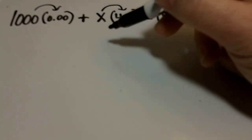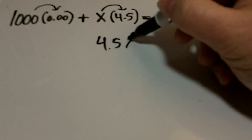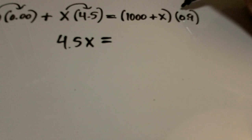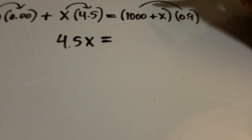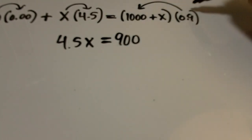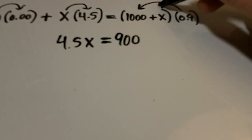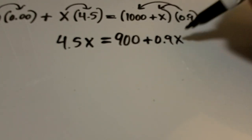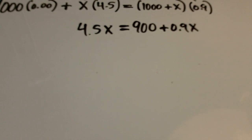x times 4.5 is 4.5x, carry over the equal sign. We're going to distribute this 0.9% through this other set of brackets. So 0.9 times 1,000 is 900, 0.9 times x is 0.9x. So now we're to this point, we're going to keep further.